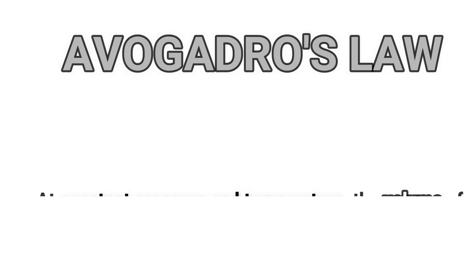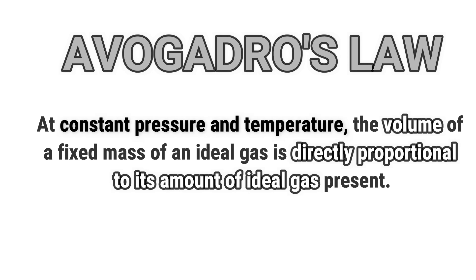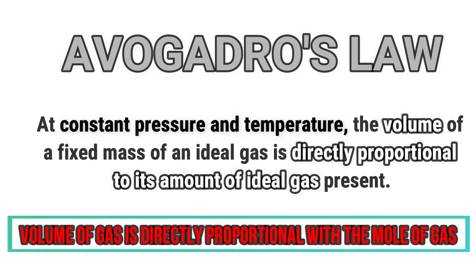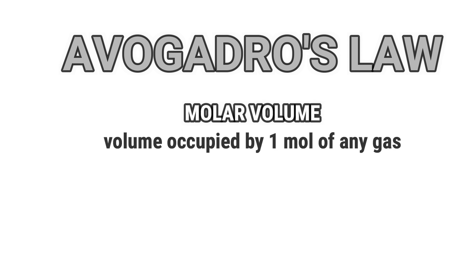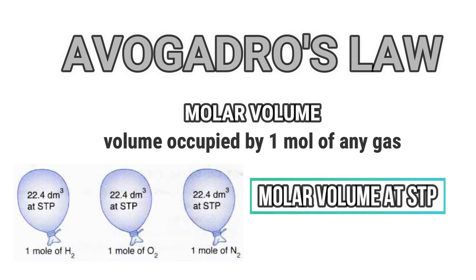The third assumption when gas has to be perfect is obeying Avogadro's law. Avogadro's law states that at constant pressure and temperature, the volume of a fixed mass of an ideal gas is directly proportional to its amount of gas — in other words, volume of gas is directly proportional to the moles of gas. The volume occupied by one mole of any gas, called molar volume, depends on its temperature and pressure. The molar volume of any gas at standard temperature and pressure is a defined value.